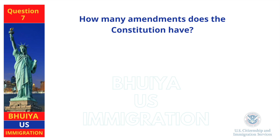How many amendments does the Constitution have? 27.